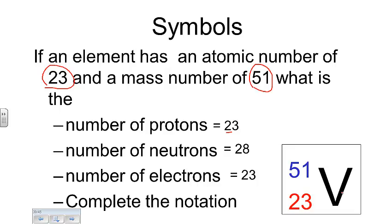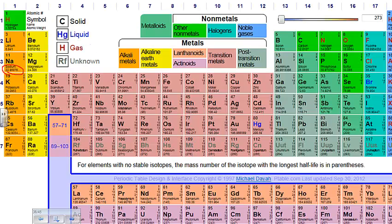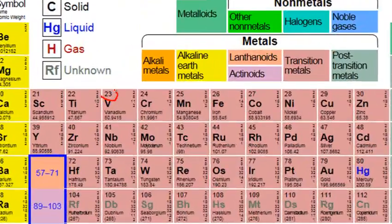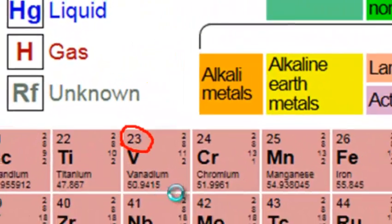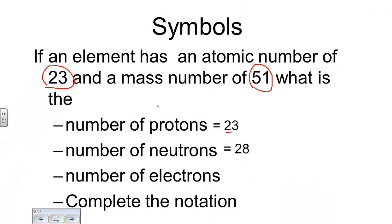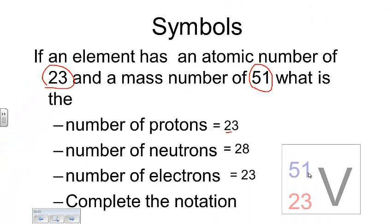Vanadium is right here on the periodic table — here's the atomic number and here's the symbol. Going back through it, the notation would look like this: 51 up here, 23 down here, and the symbol — the capital V — right there.